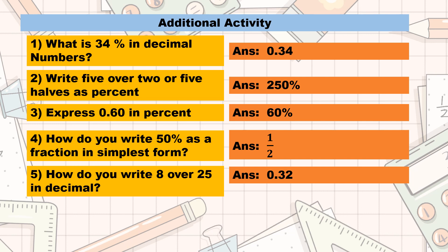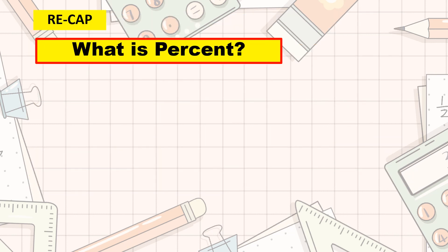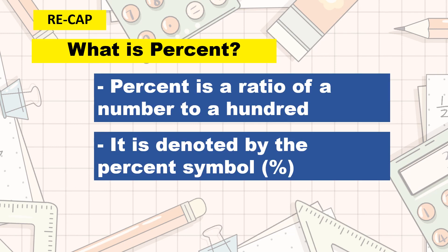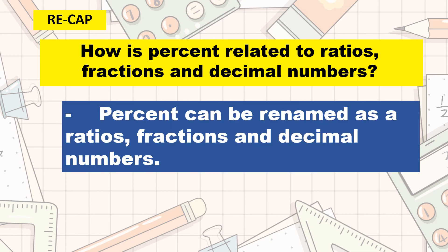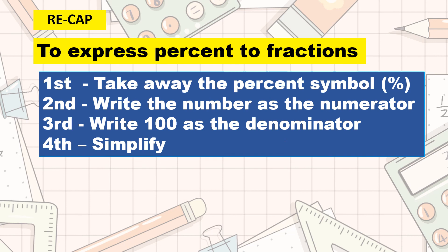Well done, grade 5 learners! For the recap, what is percent? Percent is a ratio of a number to 100. It is denoted by the percent symbol. How is percent related to ratios, fractions, and decimal numbers? Percent can be renamed as a ratio, fraction, and decimal number. To express percent to fractions: first, take away the percent symbol; second, write the number as the numerator; third, write 100 as the denominator; and fourth, simplify.